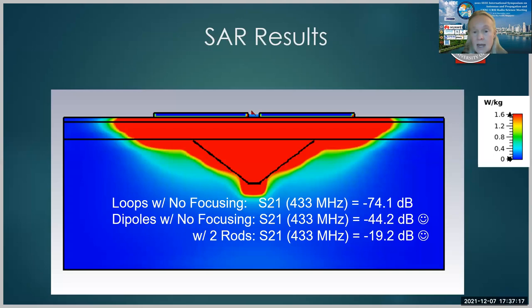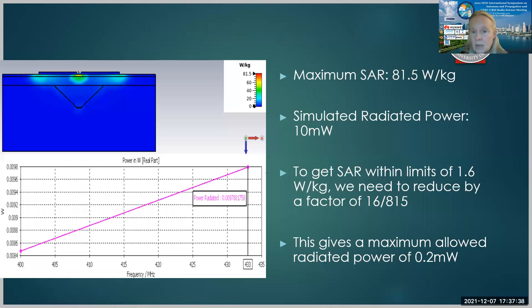So we went from dipoles with no focusing, having an S21 of minus 44 decibels to dipoles with two rods having an S21 of minus 19.2 decibels. This is a substantial improvement and both of these are better than our loop case. So again, we have a maximum SAR in this case of 81.5 and we need to divide that down. So we end up with a total maximum allowed radiated power in this case of about 0.2 milliwatts.